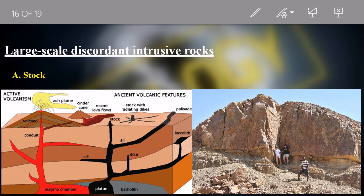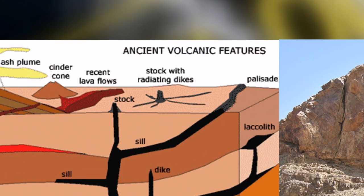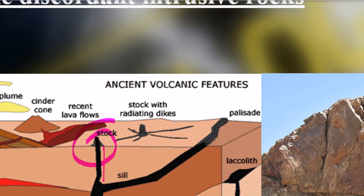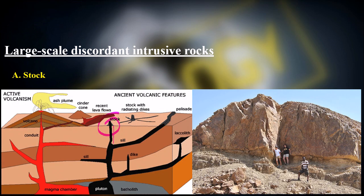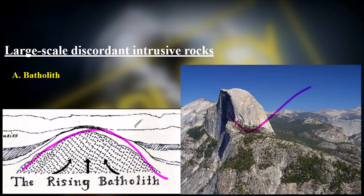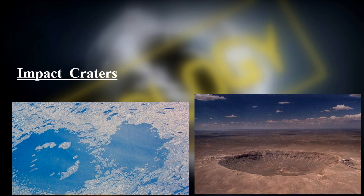On a larger scale, discordant intrusions include stocks and batholiths. A stock is a blob-like intrusion a few kilometers in diameter. A batholith is a huge blob-like intrusion — usually a composite of many plutons — greater than 100 square kilometers in area. Batholiths are much larger than stocks; due to erosion they can be exposed at the surface.